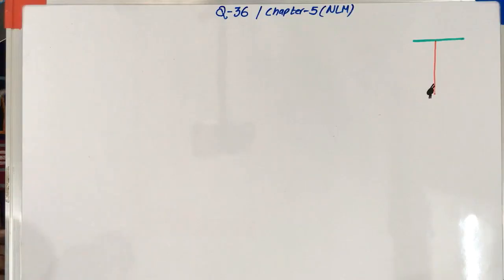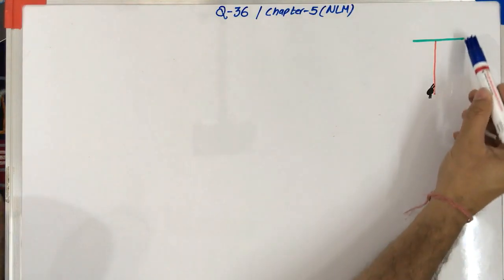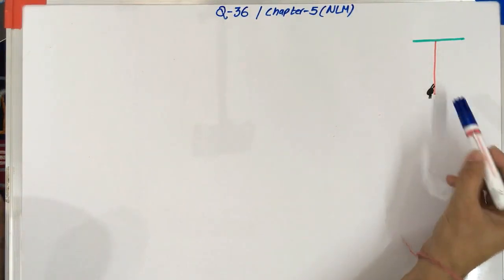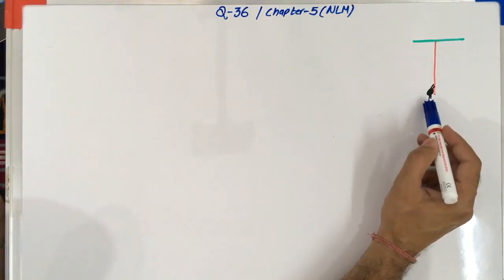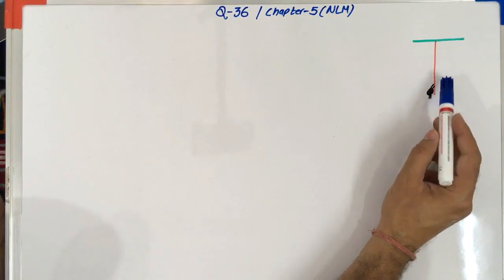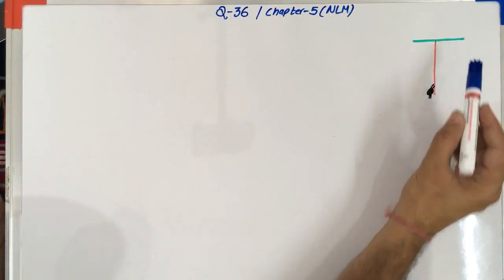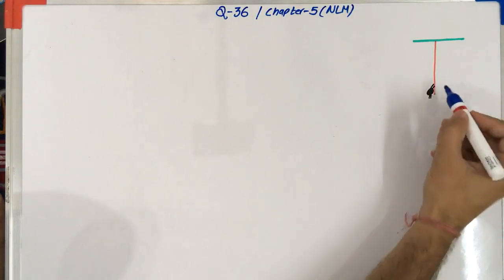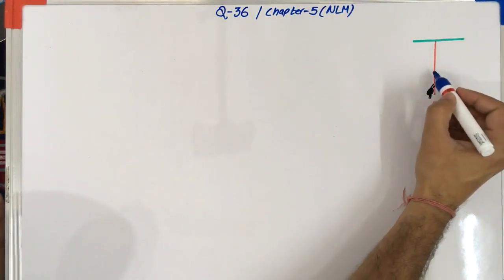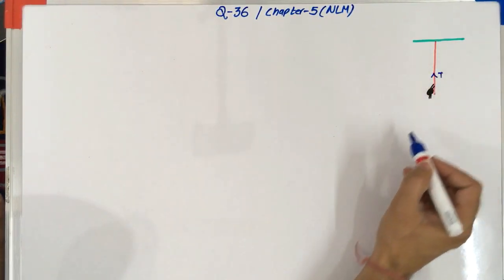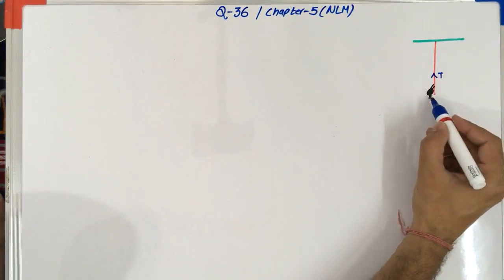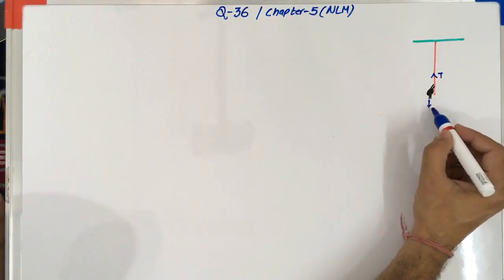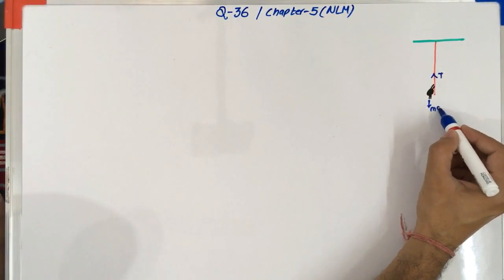So this problem is very simple. Let's say this is the ceiling and this is the rope where this black dot is a monkey and he is trying to climb up on the rope. So obviously when it tries to climb up on the rope, it will apply a tension in the string. And obviously the gravity will try to pull this monkey downward with the force of mg where m is the mass of the monkey.